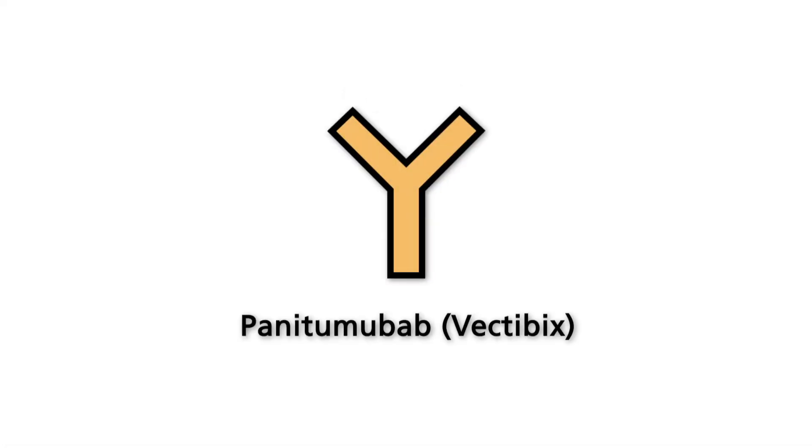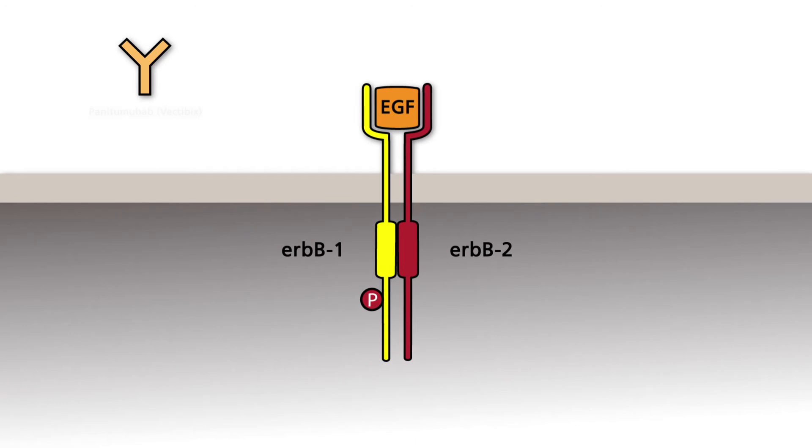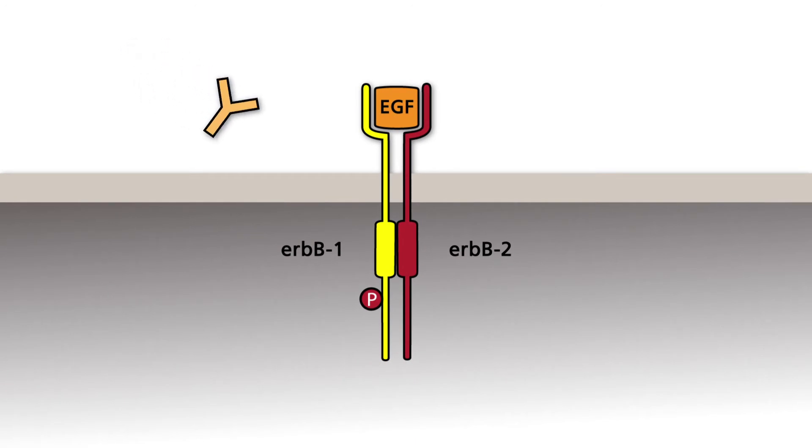The antibody Panetumimab, registered trademark Vectibix, binds to an antigenic site within the extracellular domain of the EGF receptor ERB-B1 and inhibits the activation of the receptor after binding of the ligand and heterodimerization. Thus, in the presence of Panetumimab, the receptor does not phosphorylate the intracellular tyrosine residues.